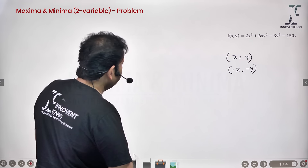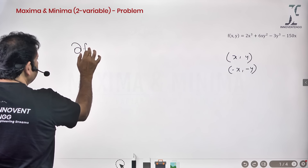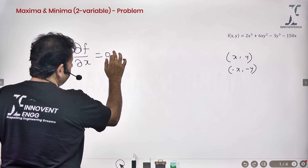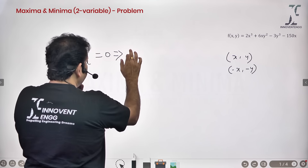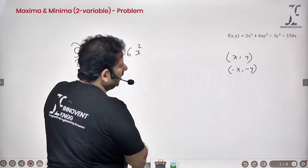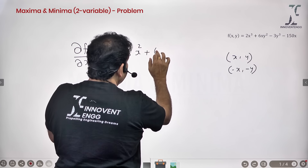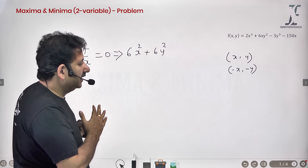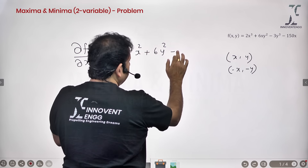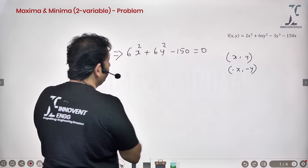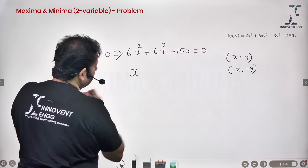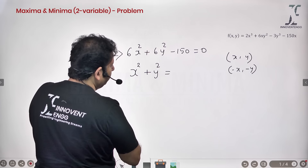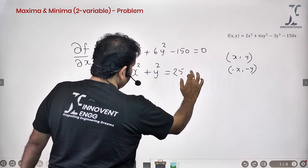Step number 1 is very simple: equate the partial derivatives of the function with respect to x and y to 0, since those are the two independent variables. When you differentiate the first term with respect to x, it is going to be 6x², the next term gives 6y², the third term is knocked out because y is treated as constant with respect to x, and then minus 150, equal to 0. If I divide both sides by 6, I get x² + y² = 25. Call this equation 1.